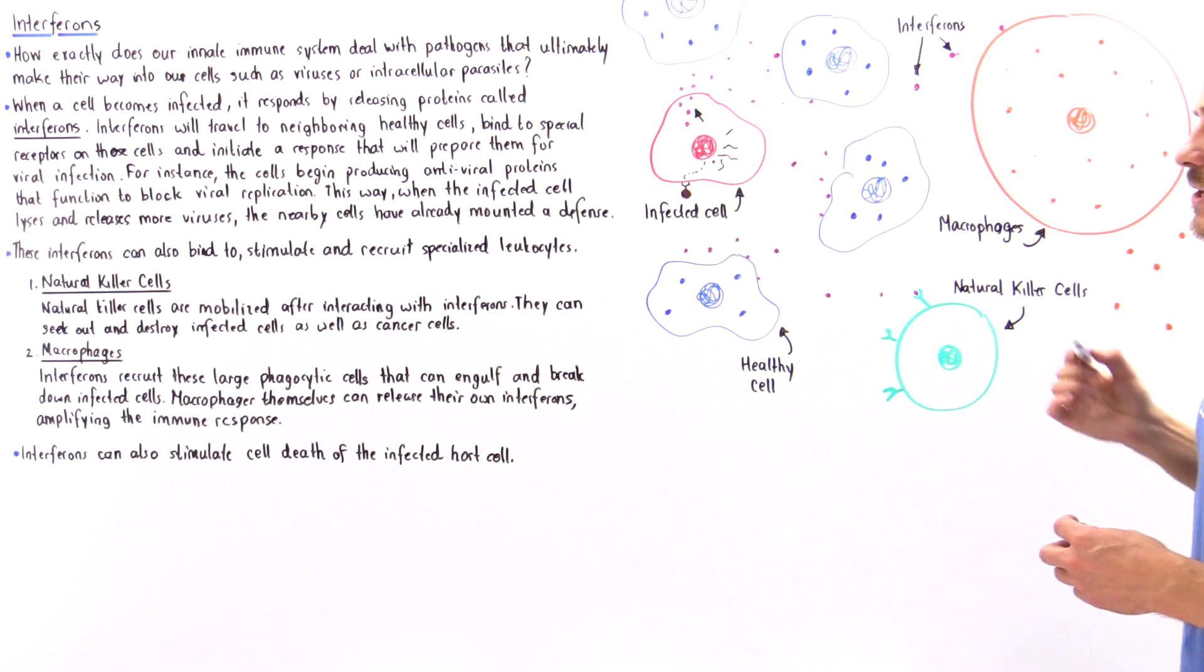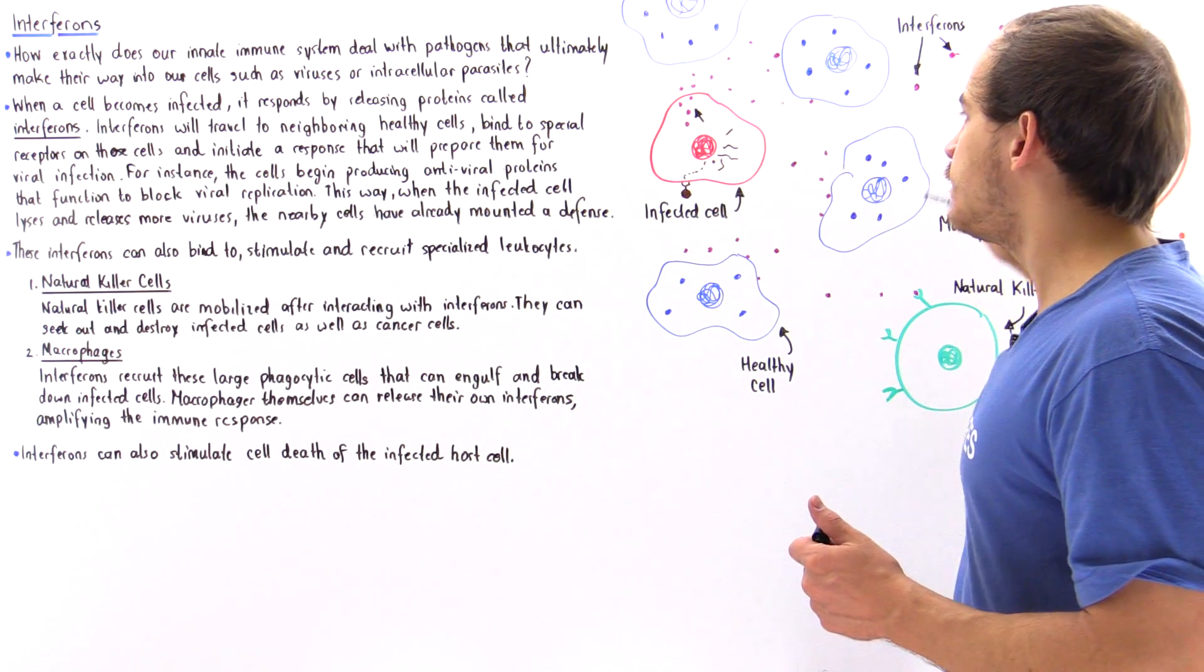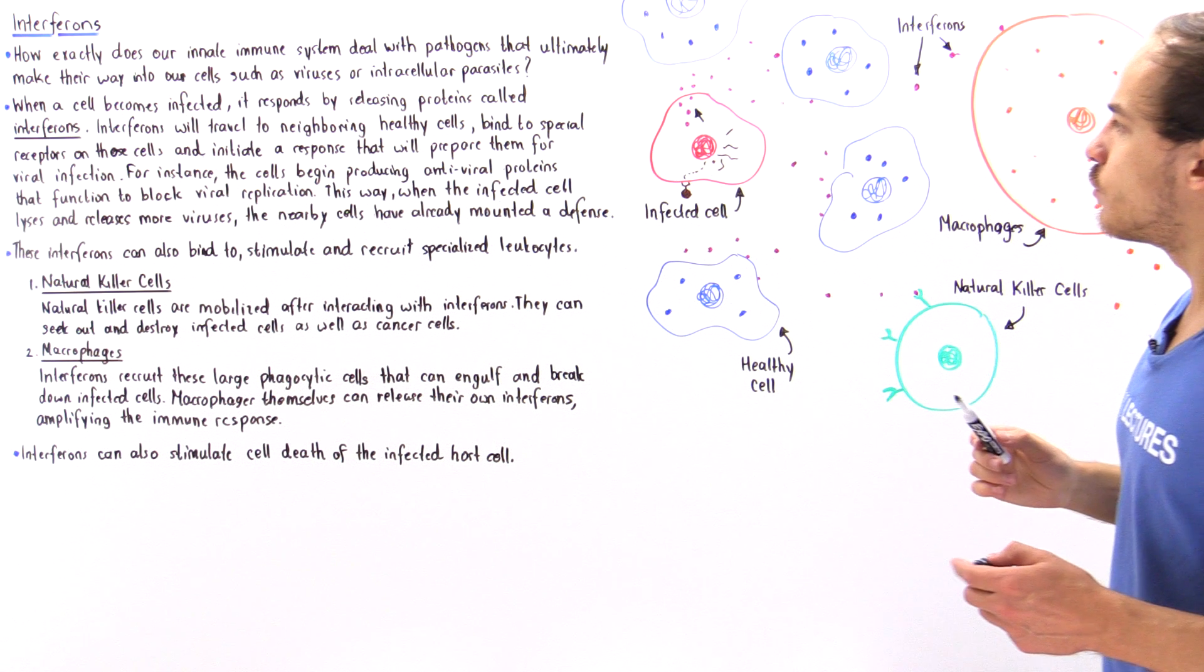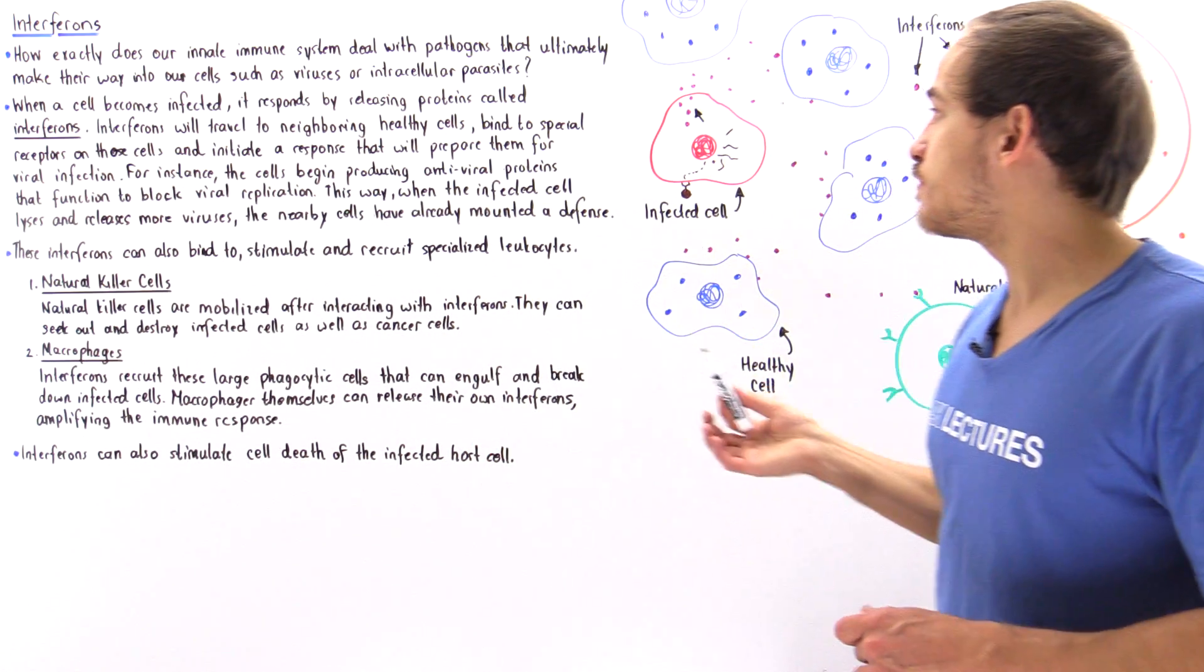Now what's the function of these interferons? Well basically we have a bunch of healthy nearby cells shown in blue and we also have other white blood cells that are in close proximity. For example we have the natural killer cell and we also have our macrophages which play a role in the innate immune response.